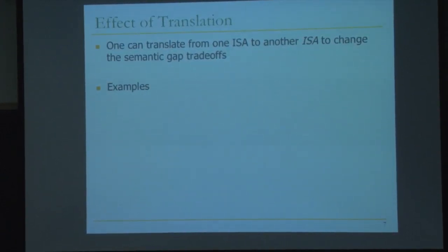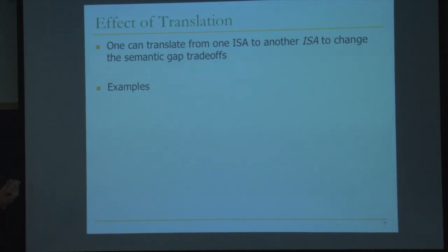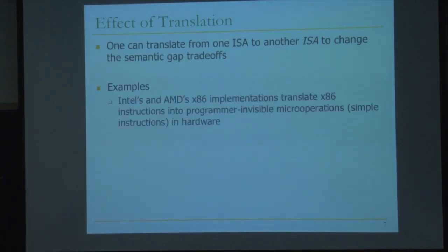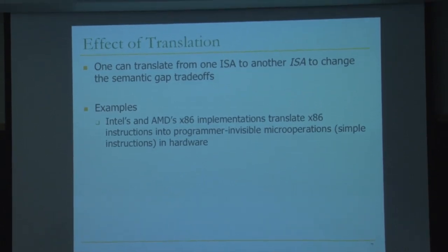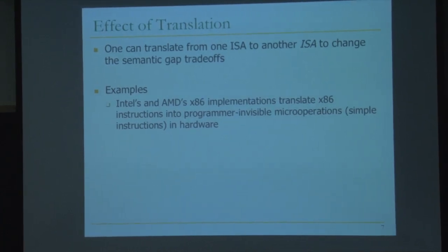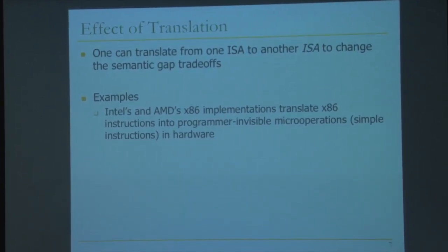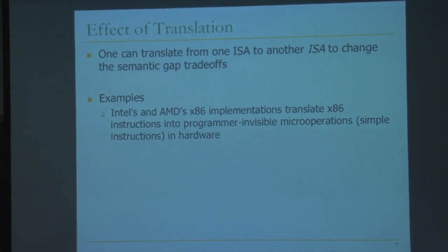One can translate from one ISA to another ISA to change the semantic gap trade-offs. People have tried to translate from x86 to PowerPC and PowerPC to x86. In fact, the virtual machines you're using are doing this — translating from one ISA to another ISA. Intel's and AMD's x86 implementations translate x86 instructions into programmable invisible micro-operations or micro-instructions — simple RISC-like operations — in hardware. This translation layer is in hardware.